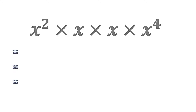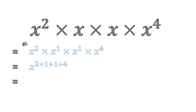The first thing we need to see is that all our bases are the same, yet the powers are different — we have to the power of 2, to the power of 1, to the power of 1, and to the power of 4. Applying our first rule, since the bases are the same we add all the powers together: 2 plus 1 plus 1 plus 4, and simplified this becomes x to the power of 8.